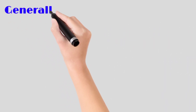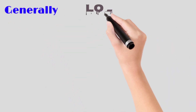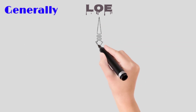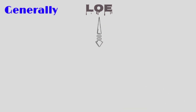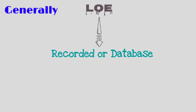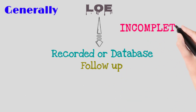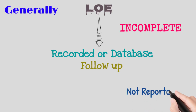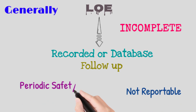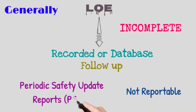Generally in pharmacovigilance, reports of lack of efficacy or lack of effect should be recorded in a database and followed up if incomplete. All lack of efficacy reports are not normally reportable to the regulatory authority, but should be discussed in periodic safety update reports as applicable. We will discuss what periodic safety update reports are in a separate video.